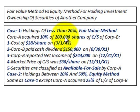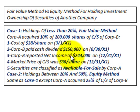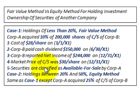For our example, Corp A is going to acquire 10% of the 200,000 shares of common stock of Corp B at a cost of $28 per share. Corp B paid a cash dividend of $150,000 for the year, and Corp B also reported net income of $244,000 at the end of the year. The market price of common stock was $30 per share at year end. These securities are classified as available for sale securities by Corp A.